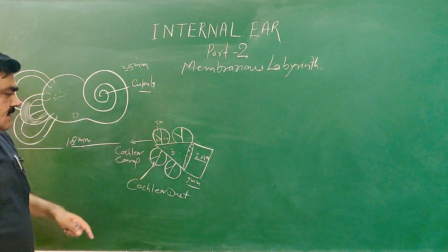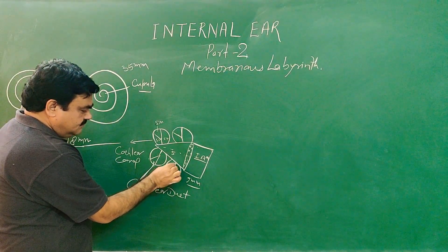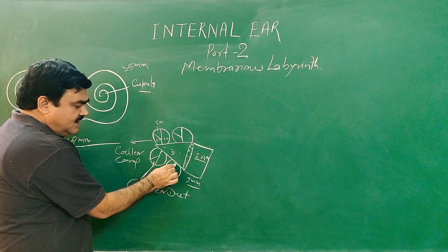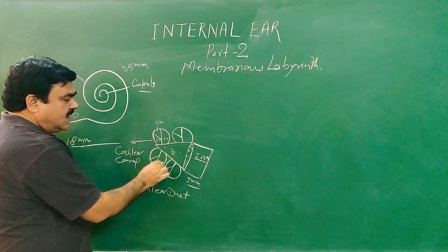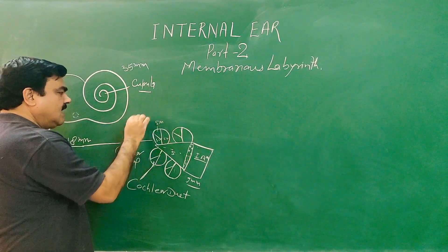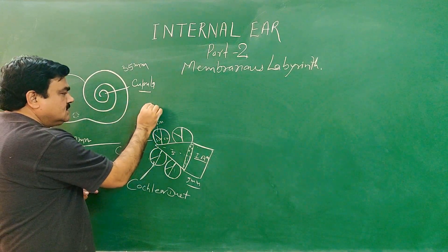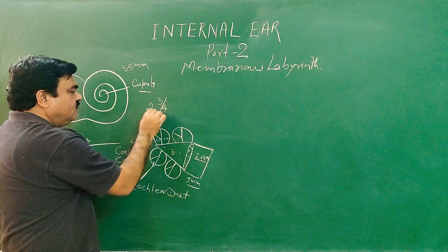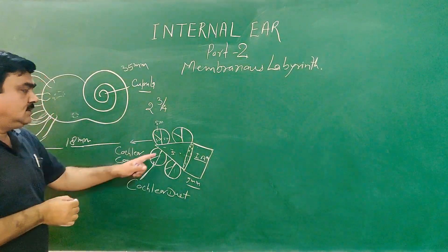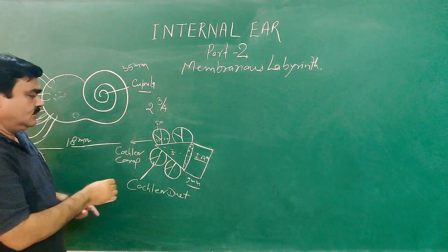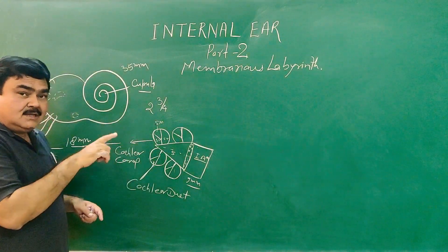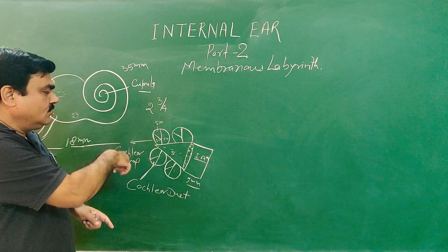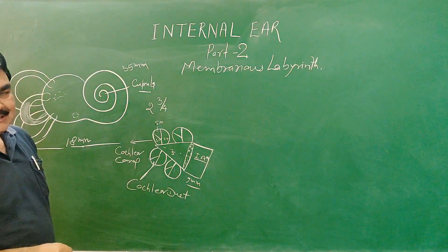Here you can see the spiral lamina and the modiolus. This is the cochlear canal. The cochlear canal makes about 2 and three-quarter turns around the modiolus.